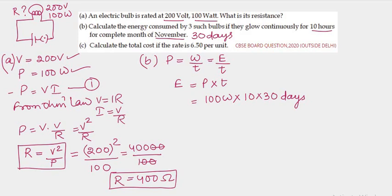So here 10 hours for 30 days. Which energy is it? It is energy consumed by one bulb. When one bulb is being used for 10 hours daily for the month of November, how much energy will it consume? So it will consume 30000 watt hours. It is 10 hours daily into 30 days.